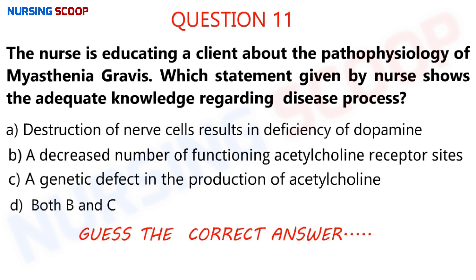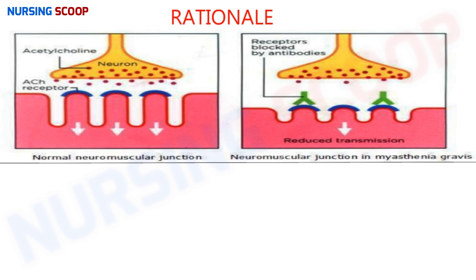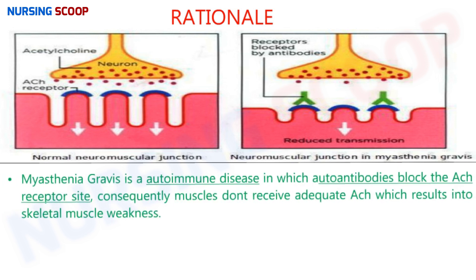The correct option is B. Here is the rationale. There are two images — the first image represents the normal neuromuscular junction. In normal conditions, acetylcholine is released from the presynaptic membrane and gets attached to the acetylcholine receptors on the postsynaptic membrane. This acetylcholine stimulates the receptors which leads to muscular contraction. But in cases of myasthenia gravis, about 80% of patients have antibodies against these acetylcholine receptor sites, and these antibodies bind to the postsynaptic receptors, blocking them and preventing muscular contraction.